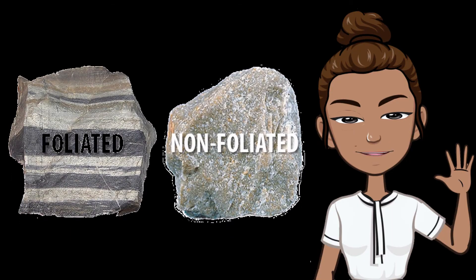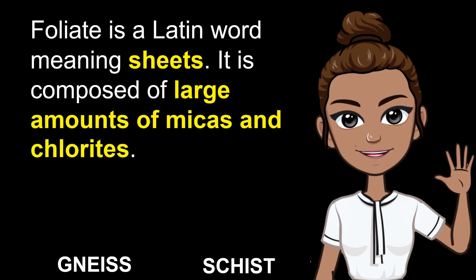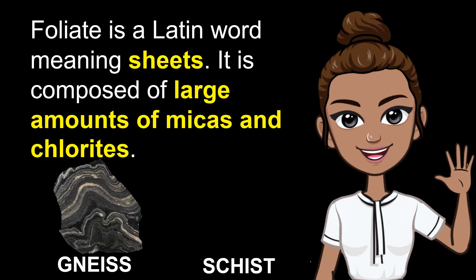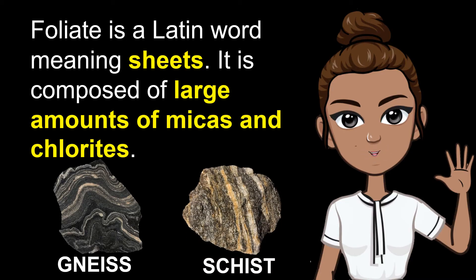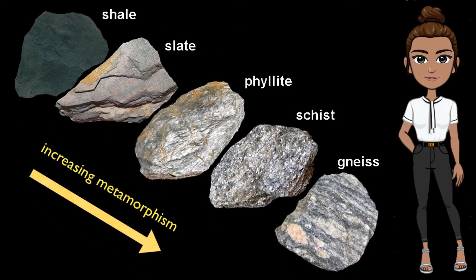Metamorphic rocks are categorized into foliates and non-foliates. Foliate is a Latin word meaning sheets. It is composed of large amounts of micas and chlorites, which are minerals that have a distinct cleavage. Gneiss and schist are examples of foliated rocks produced by regional metamorphism. For example, shale, if added with heat and pressure, can turn into slate. That slate, when added with more heat and pressure, becomes pelite. When pelite is added with even more heat and pressure, it becomes schist, and then eventually gneiss.